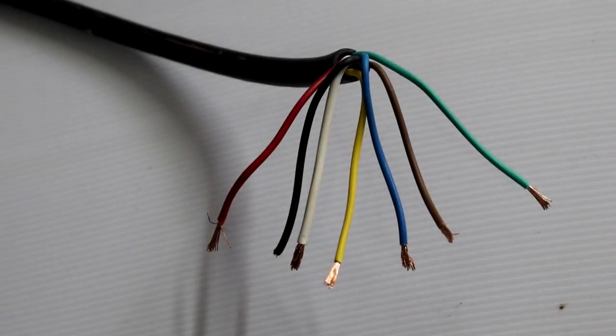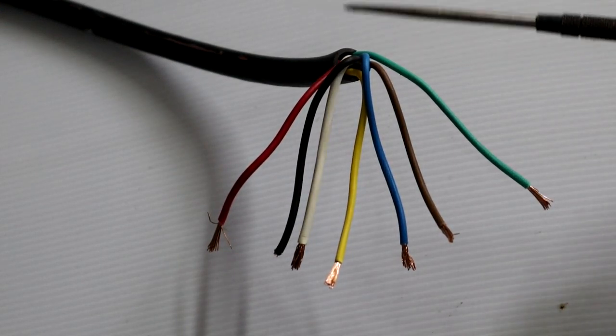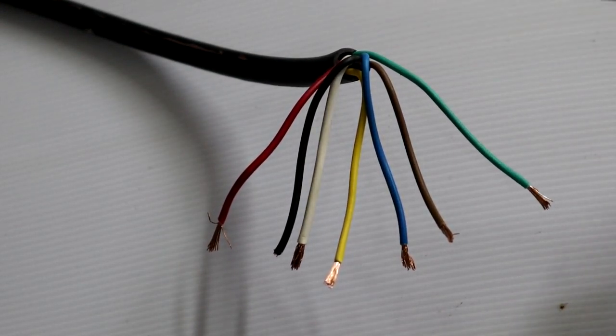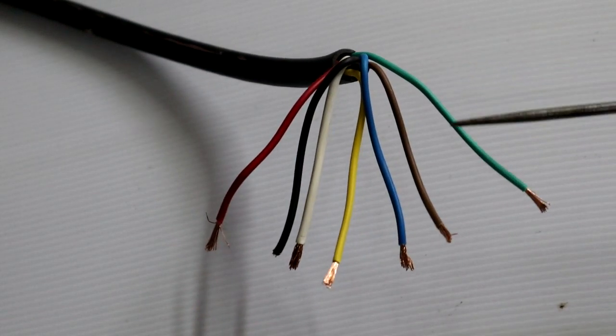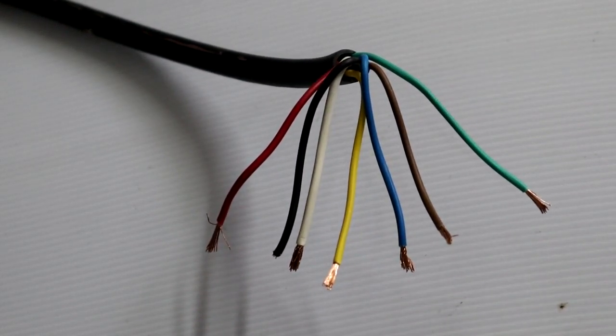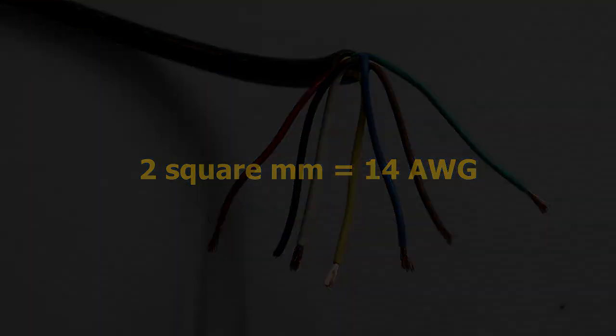Instead of fighting with a whole lot of loose wires, I'm going to run the seven core heavy-duty trailer cable from the headlights through to the dashboard. Each wire has an area of two square millimeters, so that should be more than adequate.